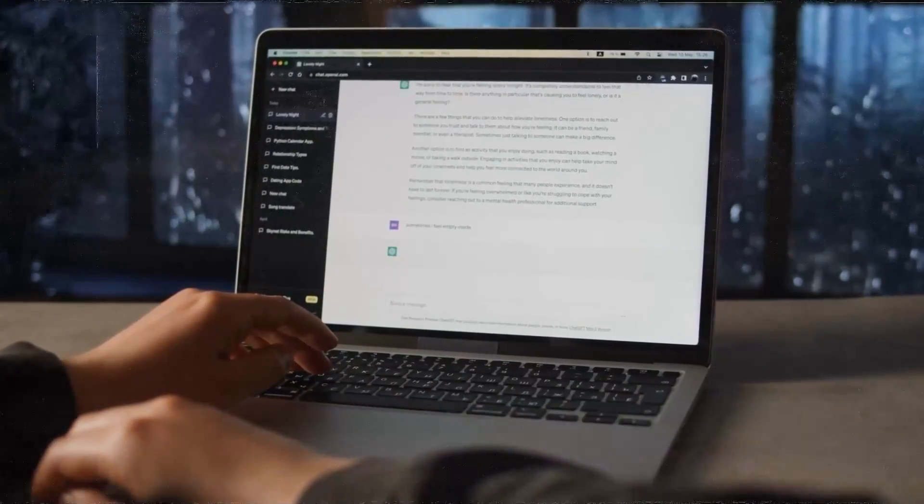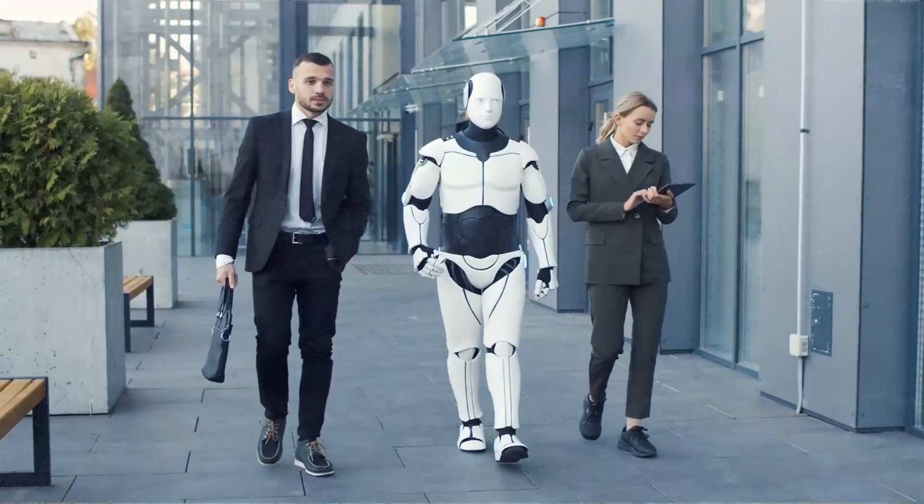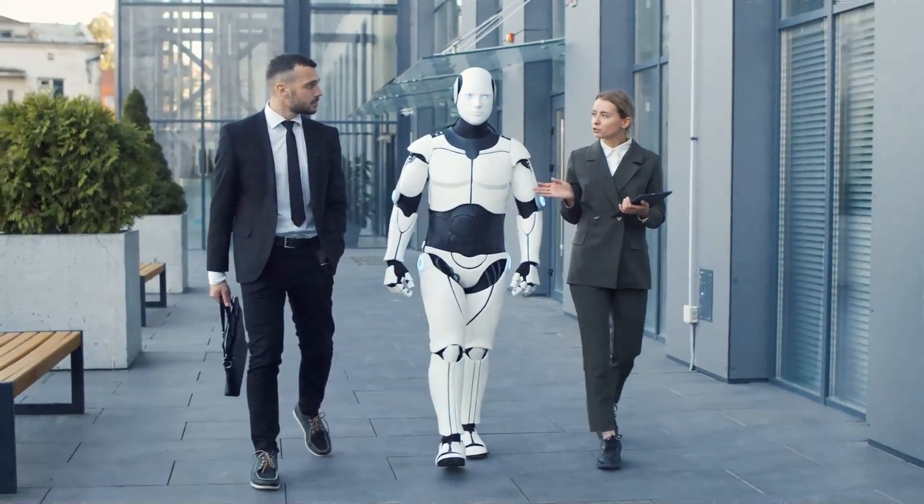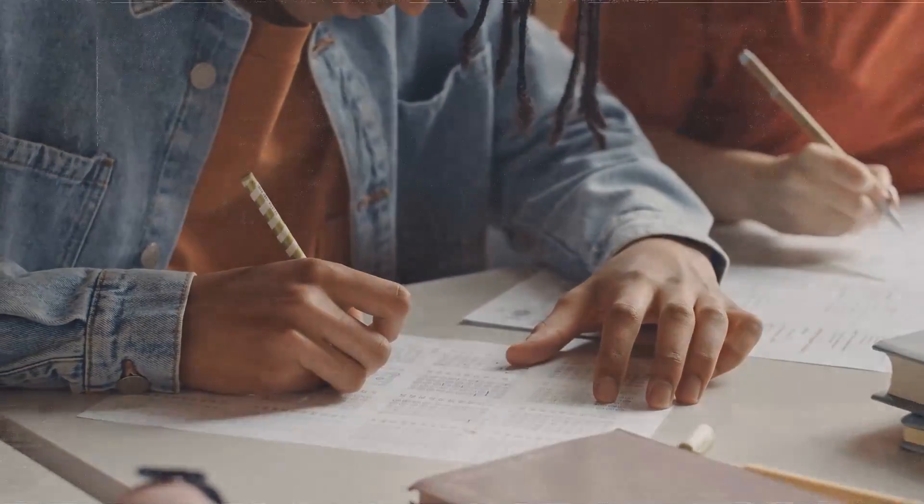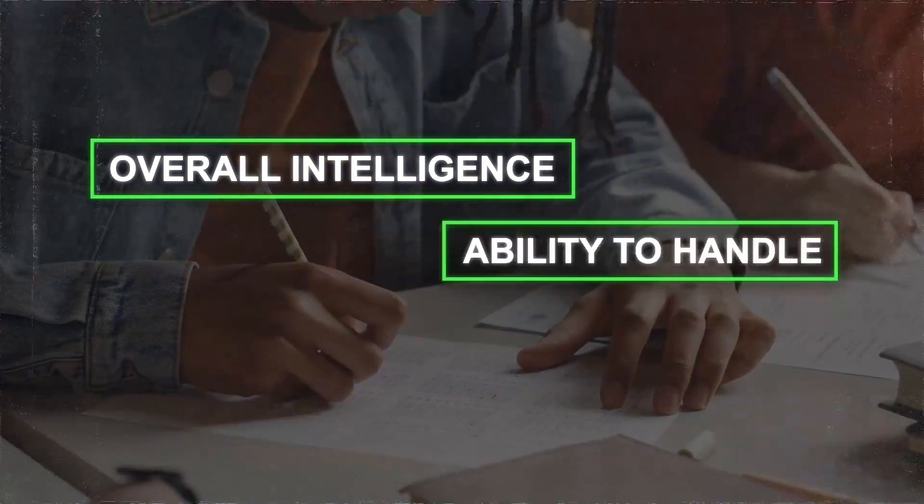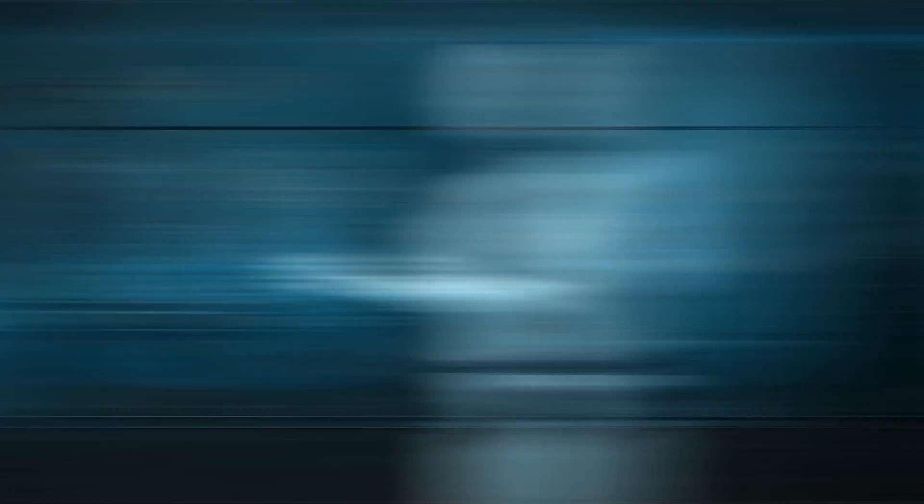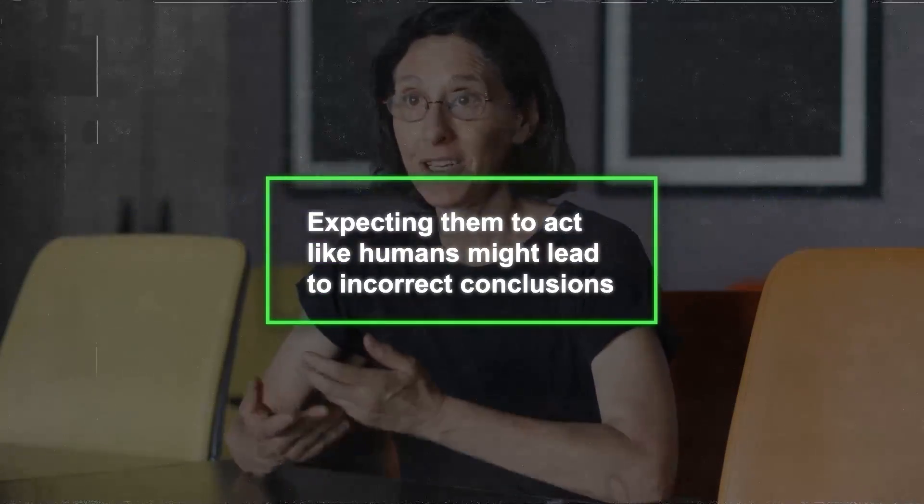A significant difference between humans and models is how we interpret high test scores. For humans, doing well on these tests suggests overall intelligence, the ability to handle different tasks and adjust to new situations. This isn't the case for language models. Mitchell warns that expecting them to act like humans might lead to incorrect conclusions.